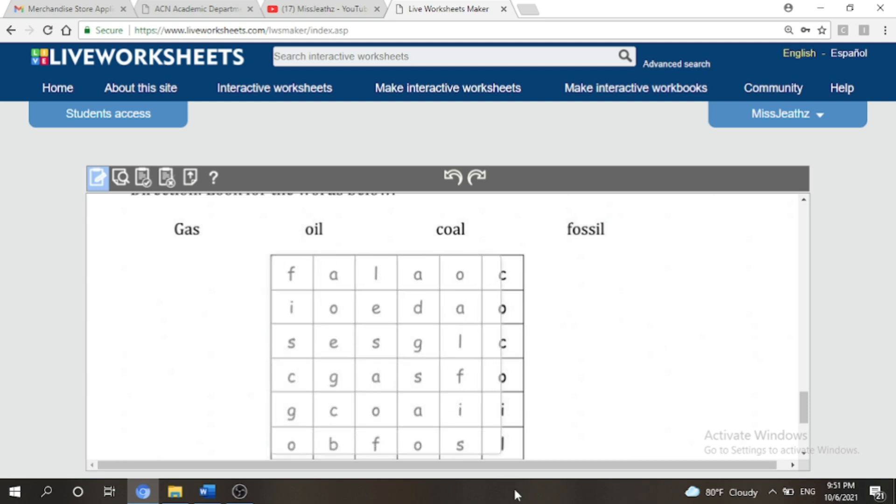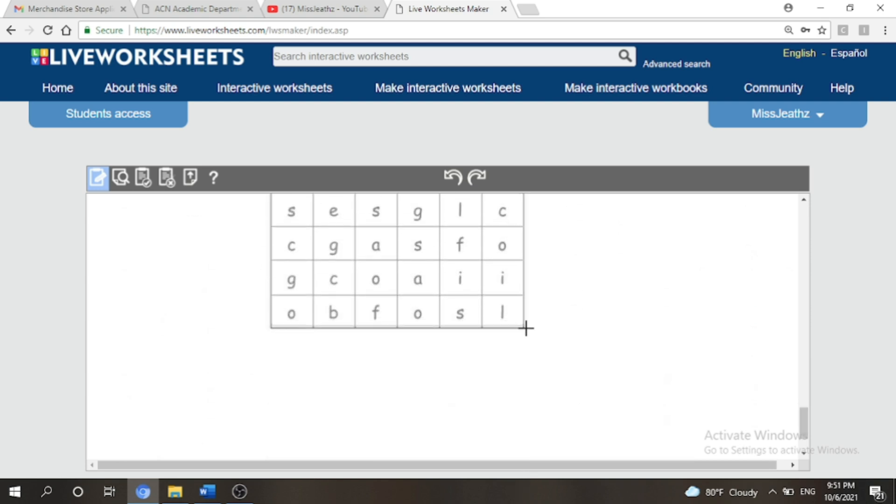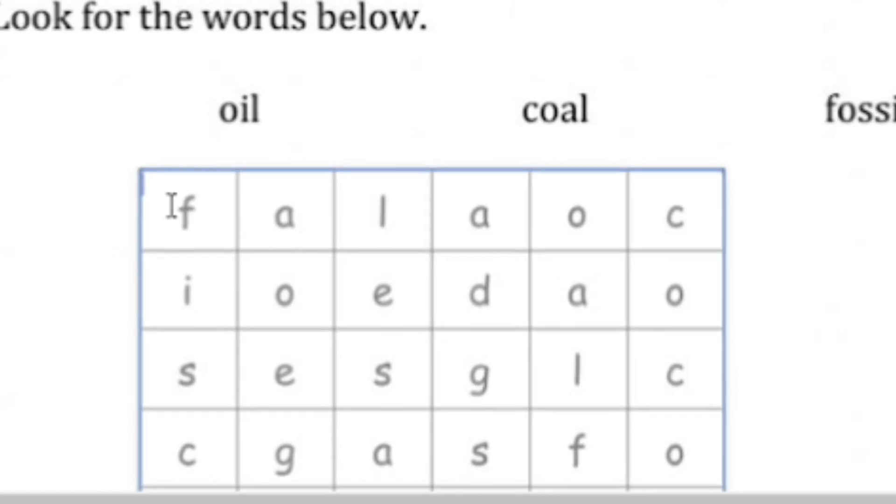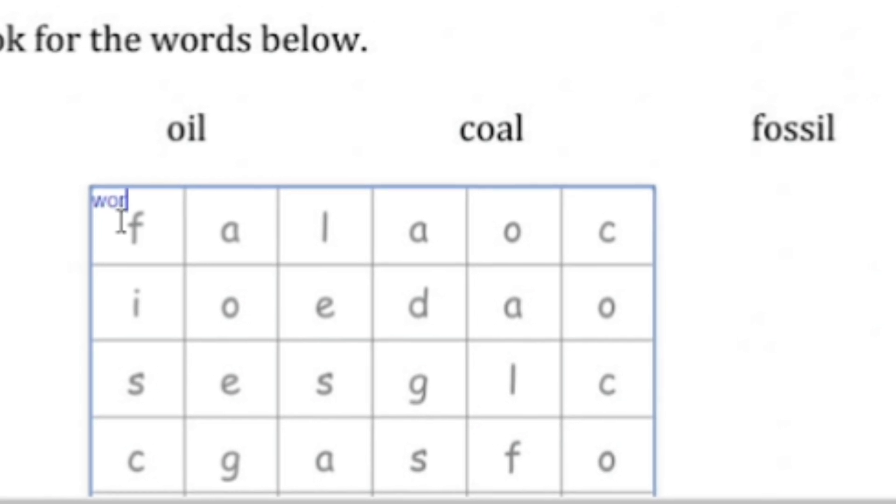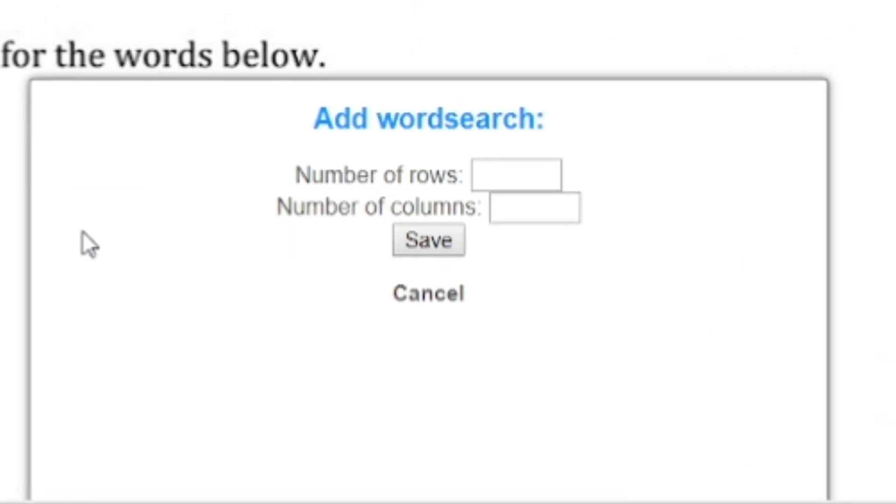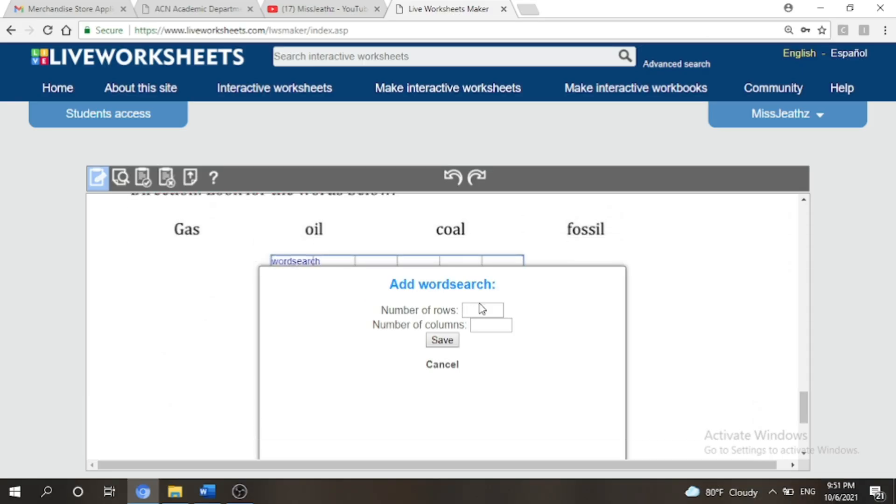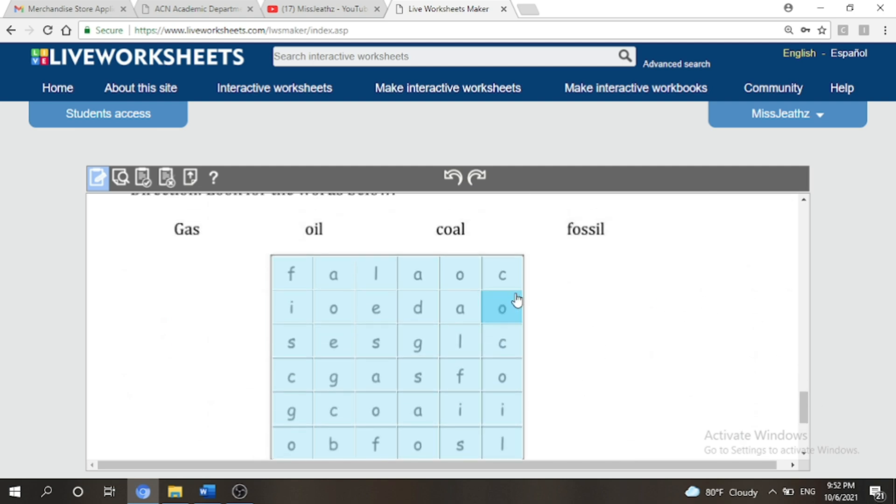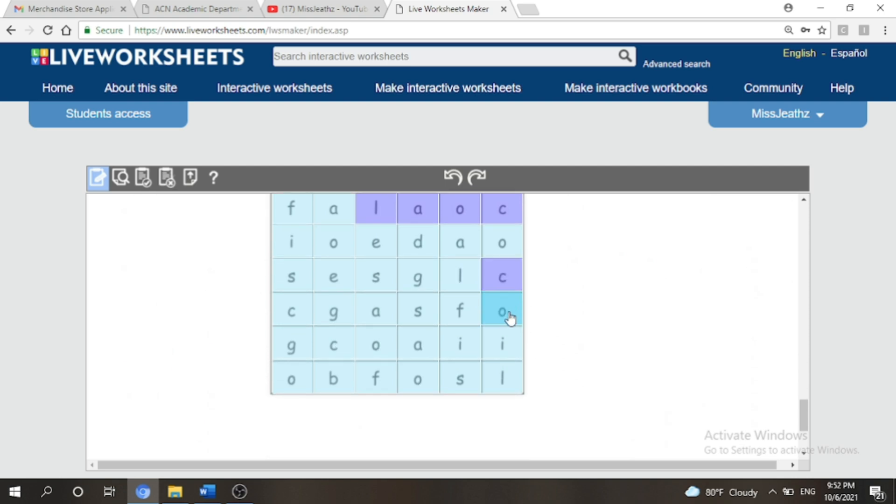What we're going to do here is we are just going to cover all the letters with one box. Now the command that we're going to use here is the word word search and an option will automatically pop up. So it will ask for number of rows and number of columns. So we have six rows and six columns, and then save it. That's how you're going to do it and then after that you just have to click all the words that the students need to search, and then the guess.